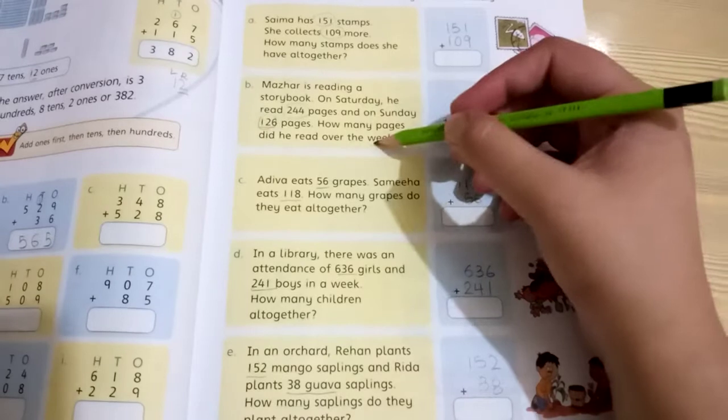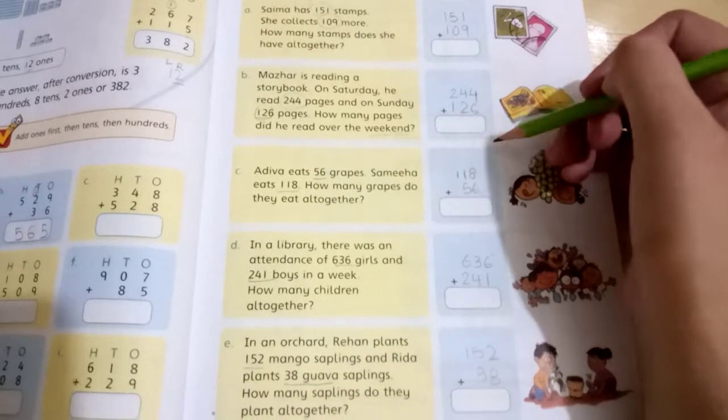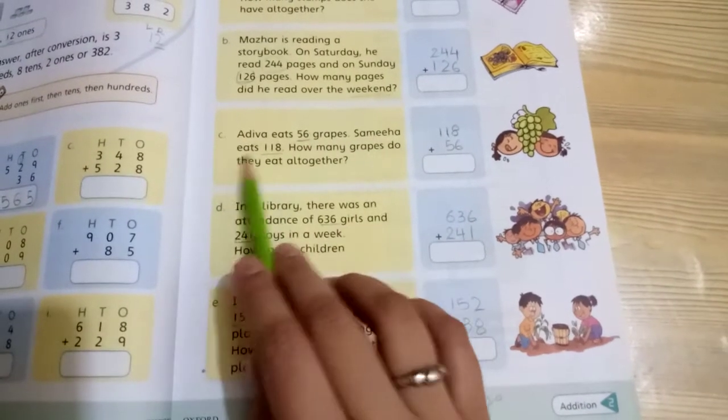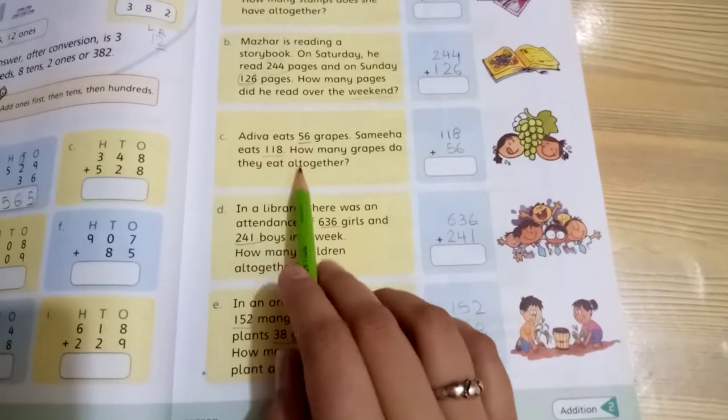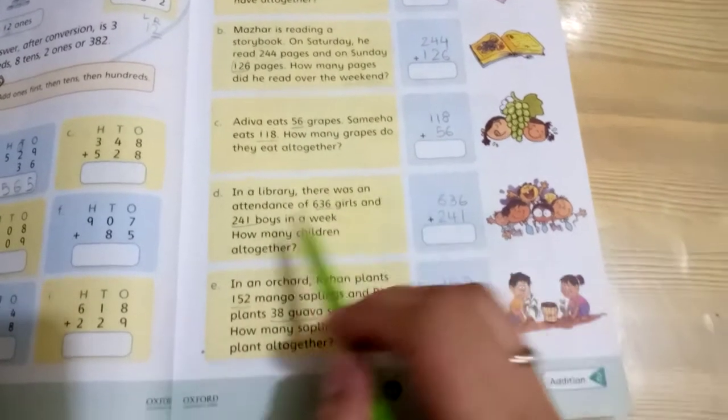Next: Adhwa eats 56 grapes, Samiha eats 118 grapes. Both together, how many total grapes did they eat? Add 118 plus 56 to get your answer.